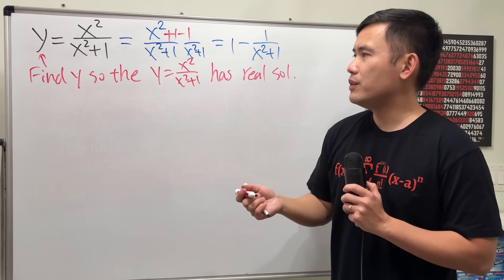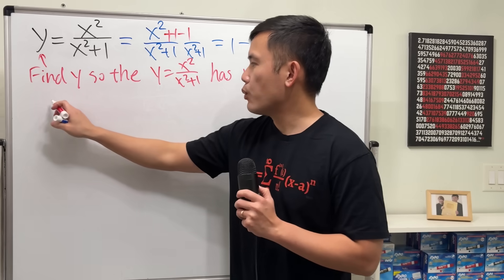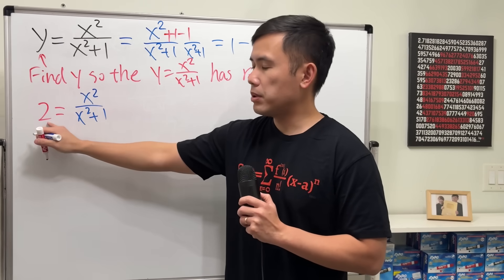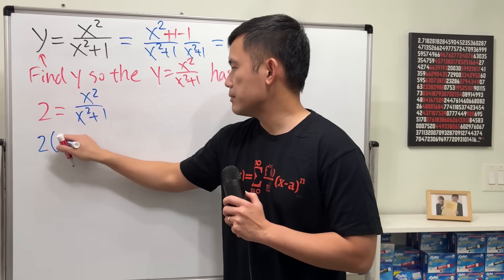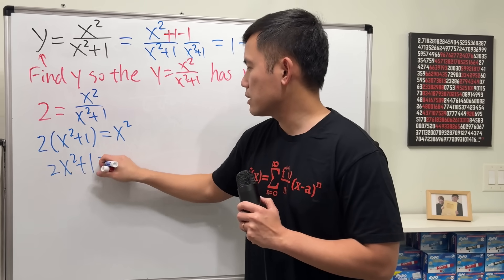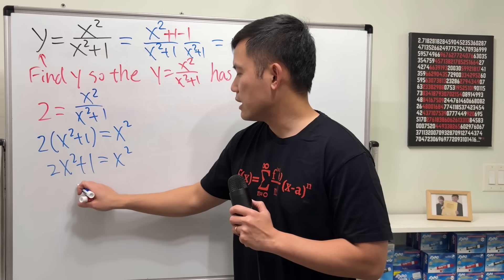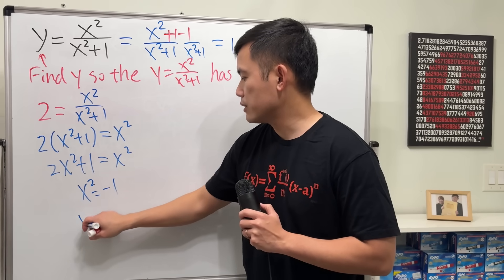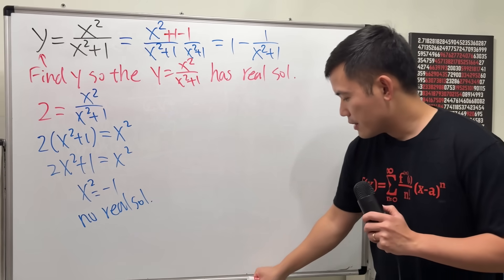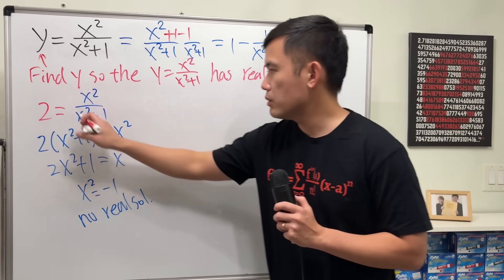Let me give you a quick example. Imagine if y = 2 — can that work? 2 = x² / (x² + 1). If I multiply both sides by (x² + 1), I get 2(x² + 1) = x². Subtract x² from both sides and subtract 1 from both sides: we need x² = −1, and of course this has no real solutions. So this tells us that 2 is not in the range of the function.